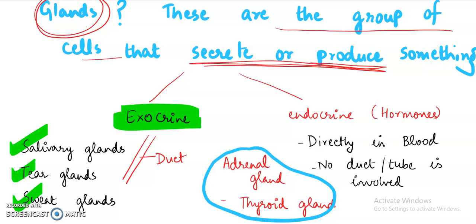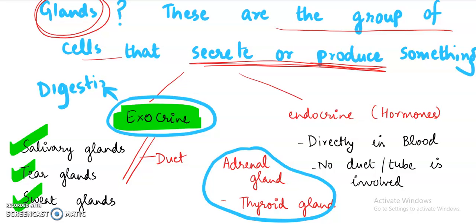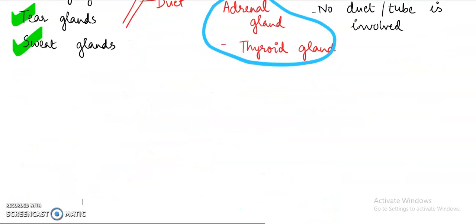As we are studying digestion, we will be talking about exocrine glands because these are the ones that basically help in digestion. The exocrine part of the pancreas produces amylase, lipase, and trypsin, which help in bringing about the final digestion of various macromolecules like carbohydrates, proteins, and fats in the small intestine. I hope that is very clear to everyone.